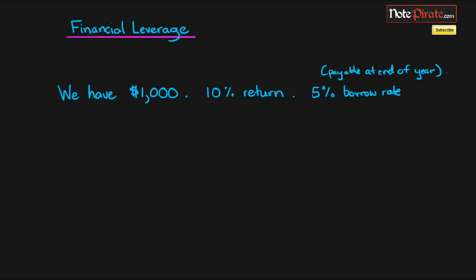I've got this investment question right here. It says that we have $1,000 and we're going to get a 10% return on the market, 5% borrowing rate if we decide to borrow, and it's going to be payable at the end of the year, the interest along with the principal.